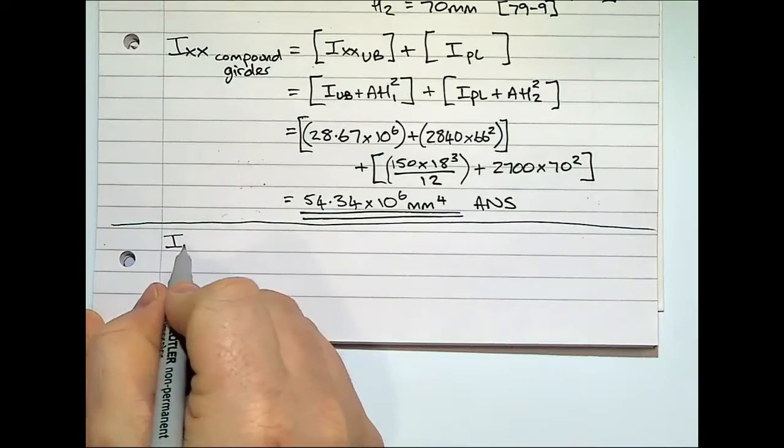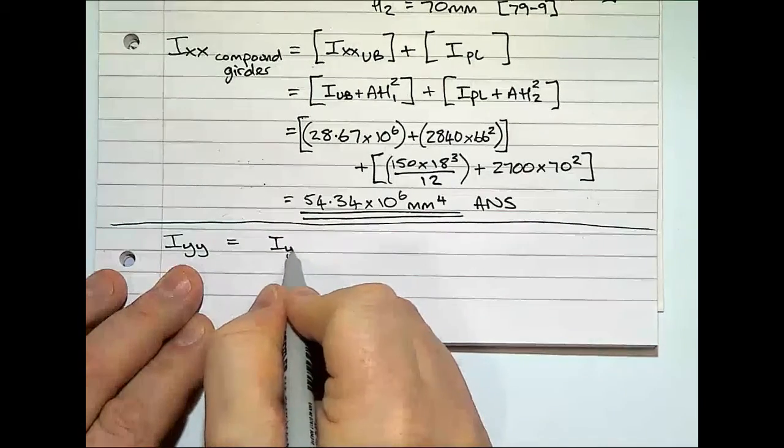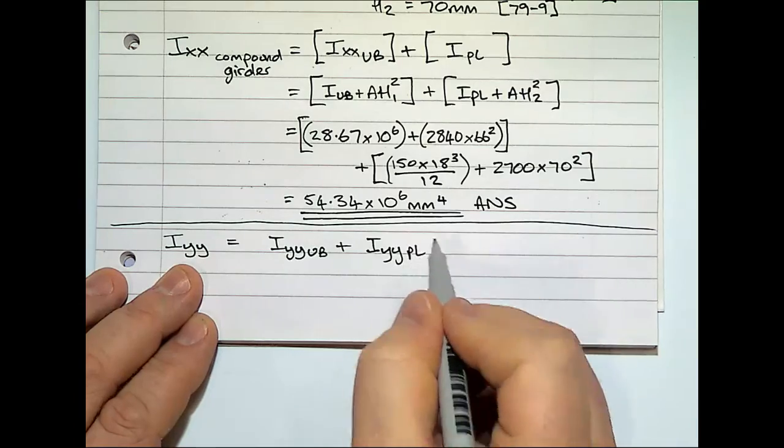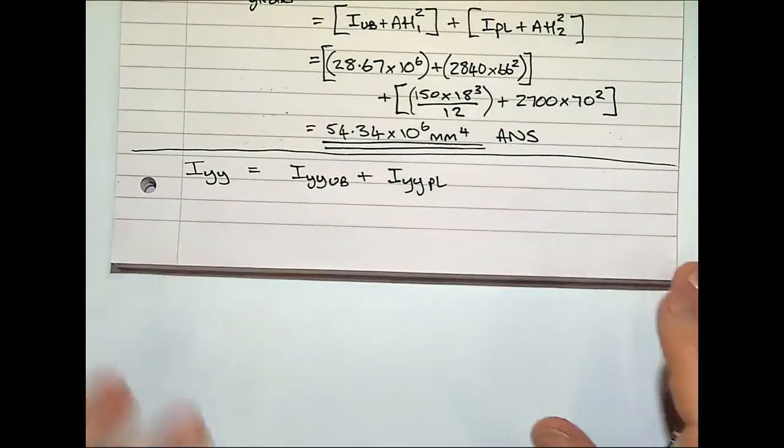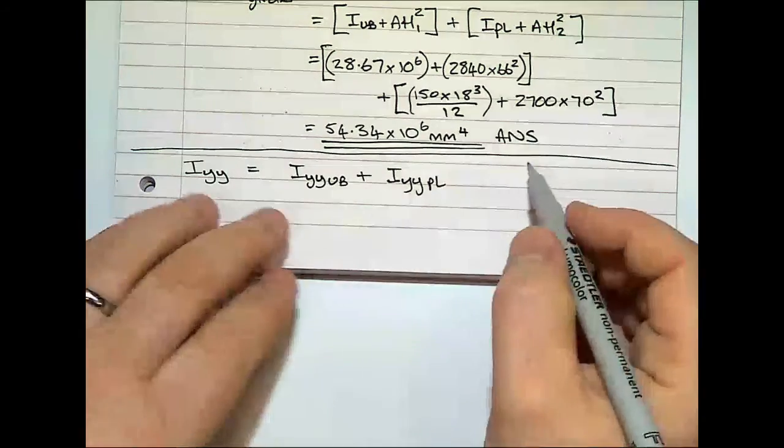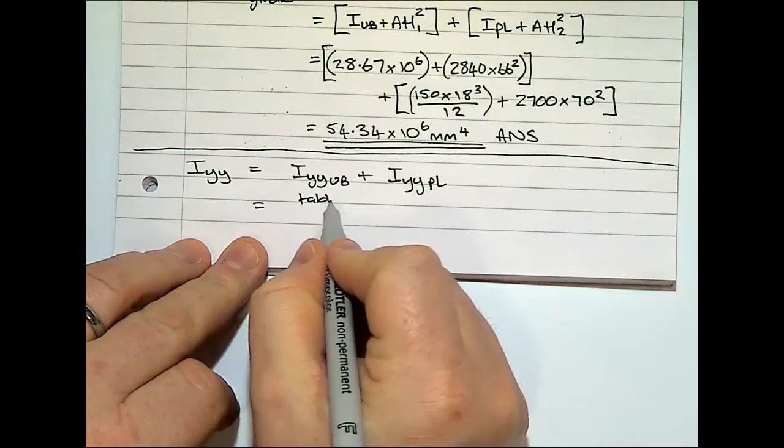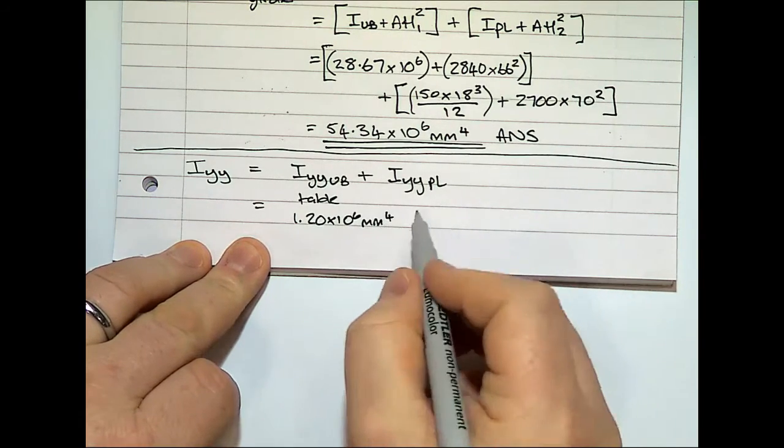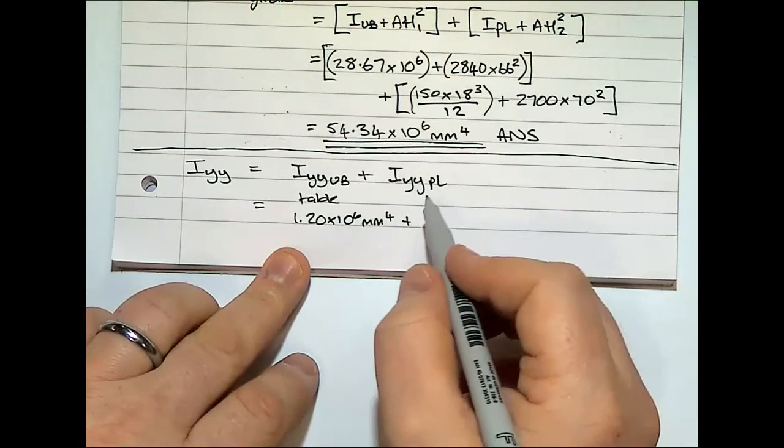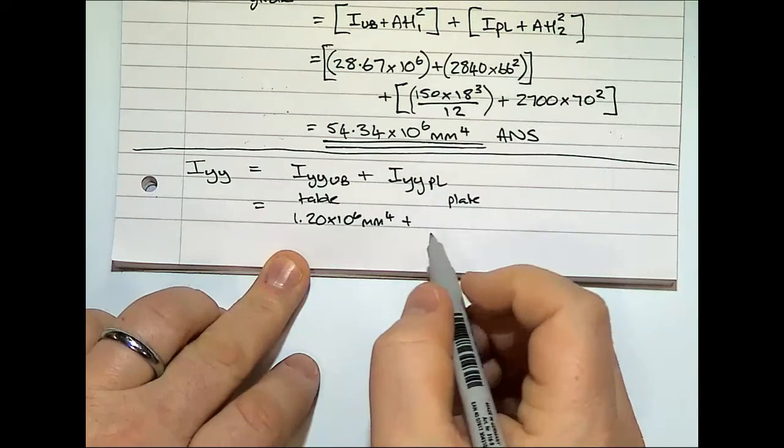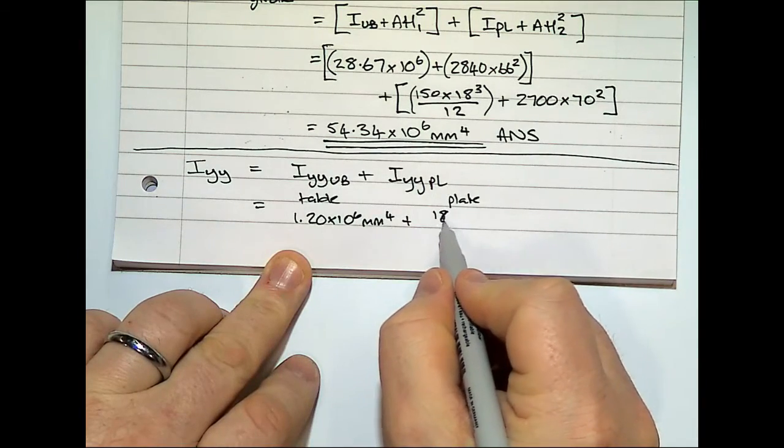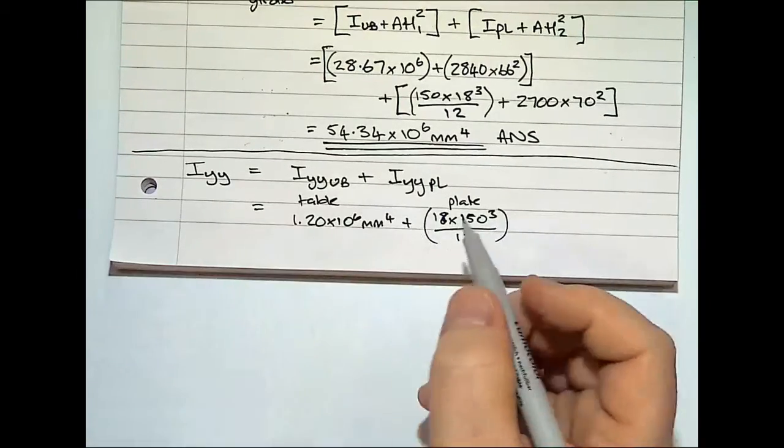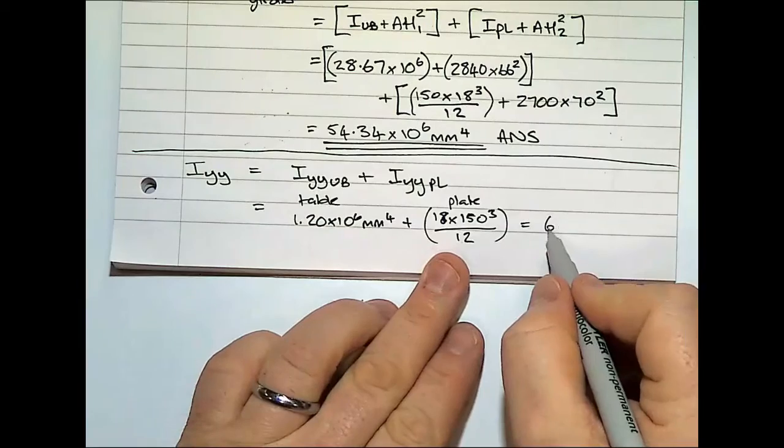And then just quickly, Iyy, where you've got Iyy of the universal beam plus Iyy of the plate. We are given in the table what Iyy is. It's 1.2 times 10 to the 6 millimetres to the 4, plus the plate. And if we use, for the plate, we'll use BD cubed over 12. So it's taking the dimensions, 18 times by 150 cubed over 12. Much easier.